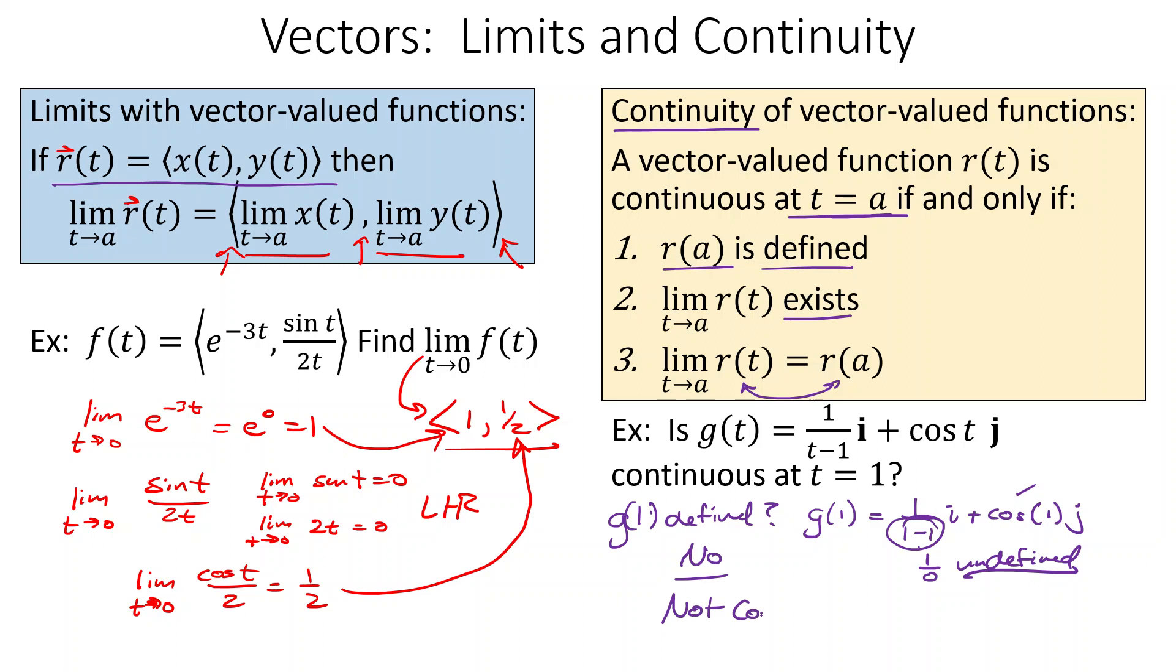So that means it's not continuous. We don't have to look at the other ones. We know the first thing fails, so it's not continuous. All right. If we tried another value, like, say, pi, then it would be continuous because we can plug in pi here. We can plug in pi here. We get a g value. The limit would exist at pi because there's no problem there. And the limit would equal the function value. So at pi, it would be continuous. But at 1, it's definitely not continuous.